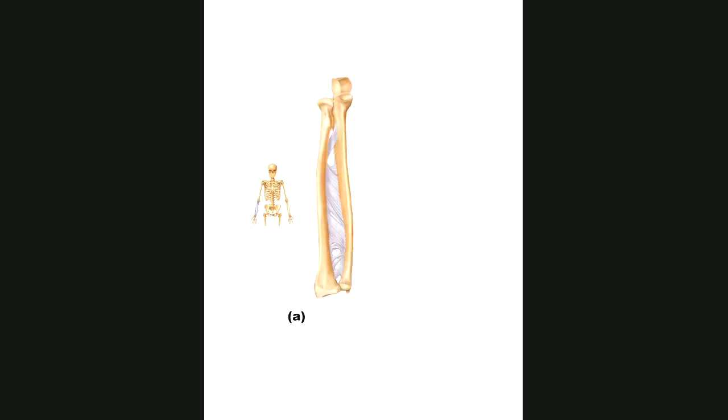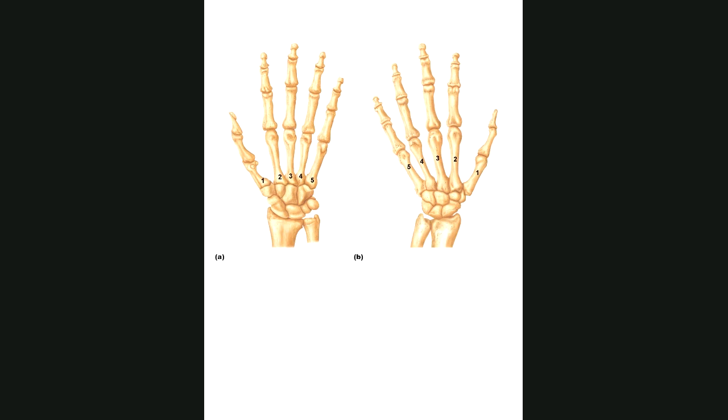This is your ulna. This is your radius. Ulna, radius. Radius is by the thumb. You remember circles have radiuses, pi r squared and all that stuff. Radius is the thumb side. This is the styloid process of the ulna. This is the styloid process of the radius. This is the trochlear notch. This is the olecranon.